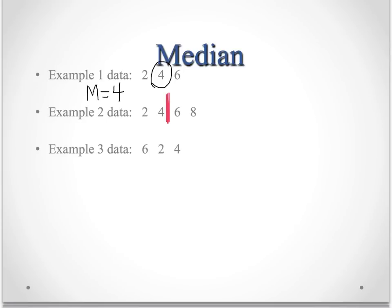So to find the median, we're going to have to add the 4 and the 6 and divide by 2. And that's going to give us 5. So the median for our example 2 data is 5.